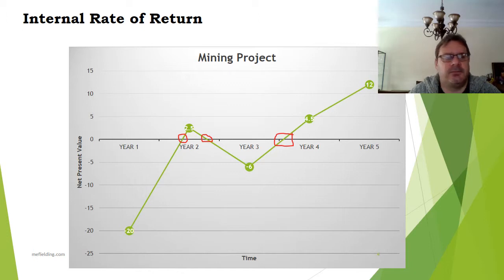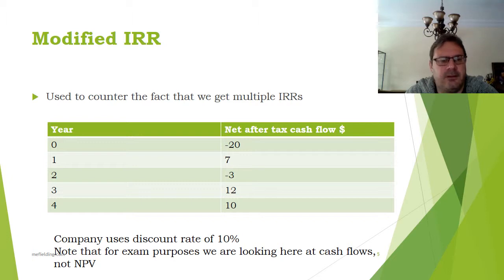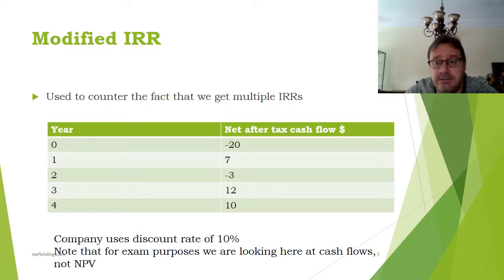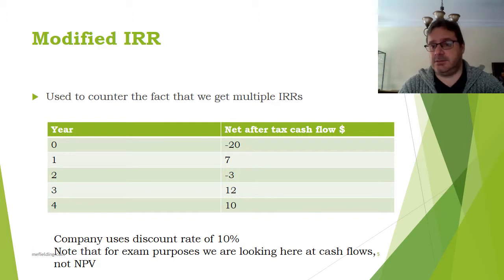Now let's move on and have a look at an exam question — I believe I took it from ACCA. This is taken from an old ACCA exam question where the topic being examined, amongst others, was the modified IRR. They actually wanted you to calculate both the IRR and the modified IRR. You've got year zero and the net after-tax cash flows. Please just make sure you're comfortable with that. It tells you there that the company uses a discount rate of 10%.